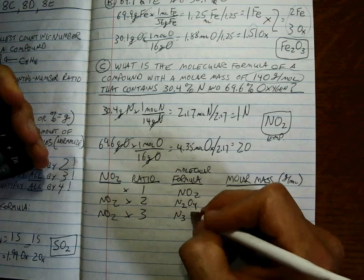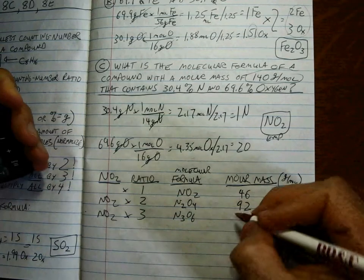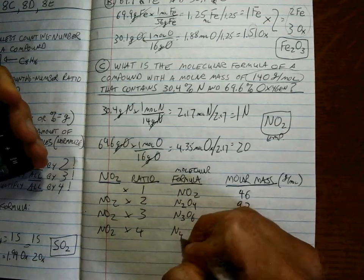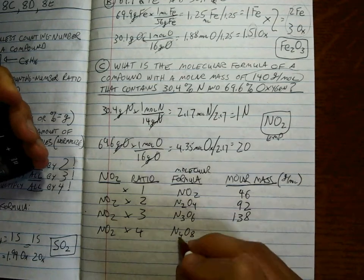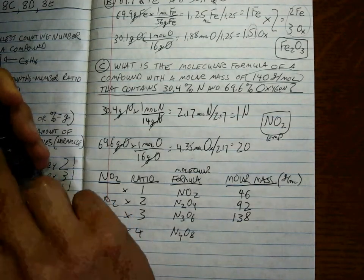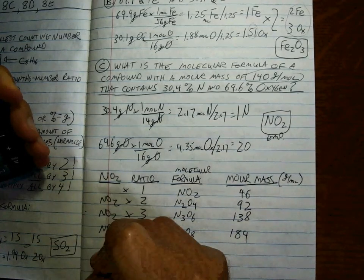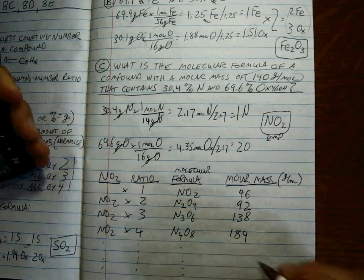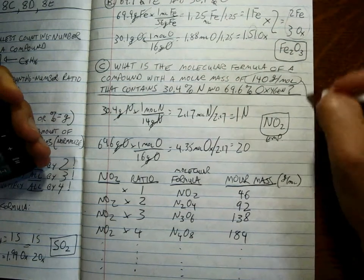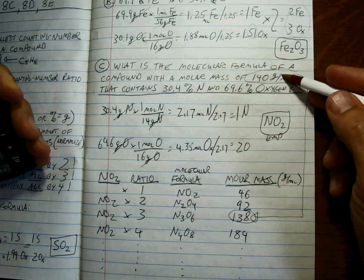As you can see, we're going to figure out all the possible ratios. All the possible molecular formulas. And this can go on forever and ever. But our key here is try to find one that matches up with our actual molar mass. And as you can see, those are the closest. 140 grams per mole is what we calculated in our problem.